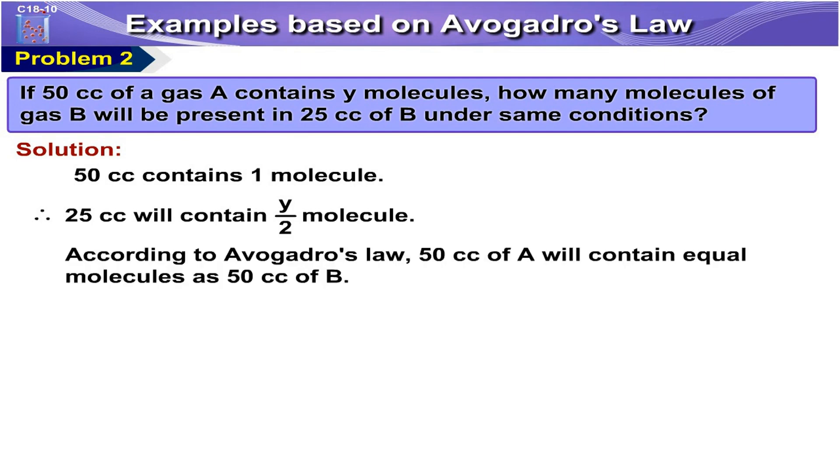According to Avogadro's Law, 50 cc of A will contain equal molecules as 50 cc of B. Therefore, 25 cc will contain half of what 50 cc contains.